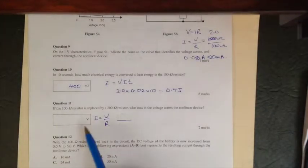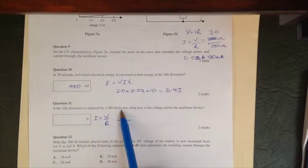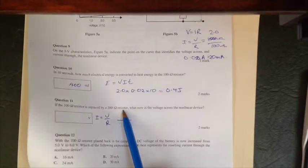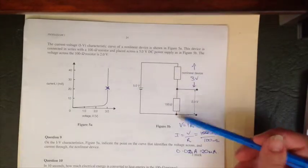Okay, so the next question is to determine what happens if a 100 ohm resistor is replaced by the 200 ohm resistor. First off, we need to remember that we have a situation where these are in series with each other.